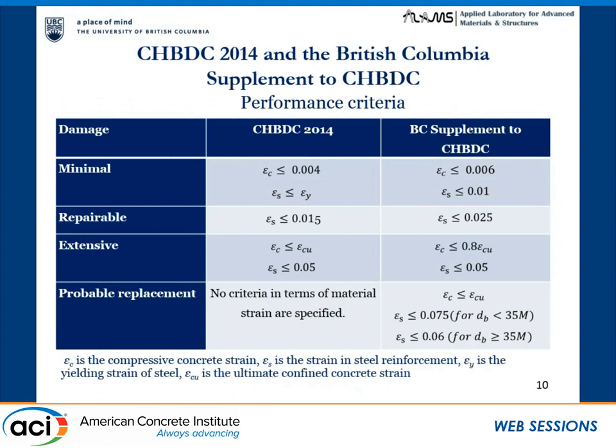After the publication of the Canadian Highway Bridge Design Code in 2014, the British Columbia Ministry of Transportation published a supplement to the national code in 2016, because the national code criteria are very stringent. In Western Canada's high seismic zones, it is very difficult to design ductile columns and capacity-protected elements under those criteria. The BC supplement increased the minimum damage steel strain limit from no yielding to 0.01, and concrete strain from 0.004 to 0.006. The repairable and extensive damage limit states were also relaxed to enable better capacity-protected element design.